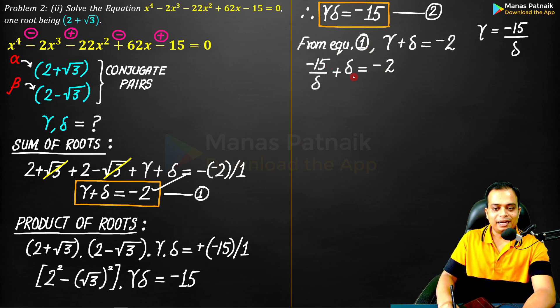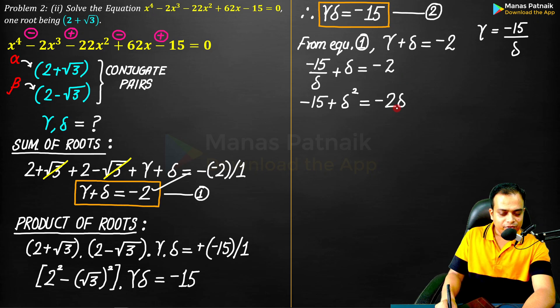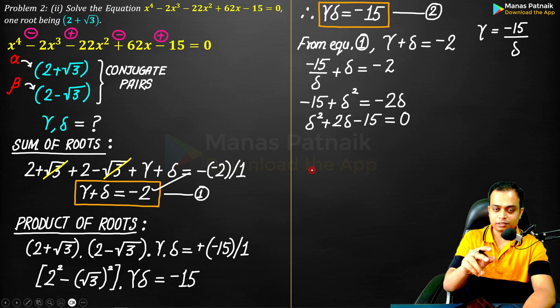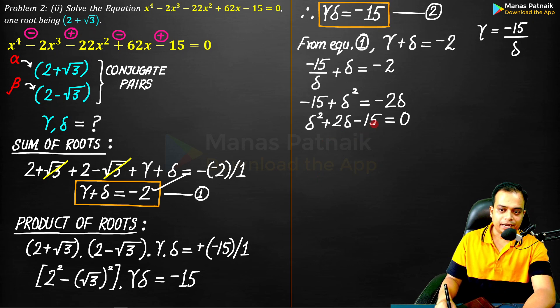Multiply both sides by δ. What will happen is -15 + δ² = -2δ. Bring -2δ to the LHS. It will become positive. So you can see that this becomes a quadratic equation. 3 × 5 is 15 and 5 - 3 is going to be 2. So we are going to use this.